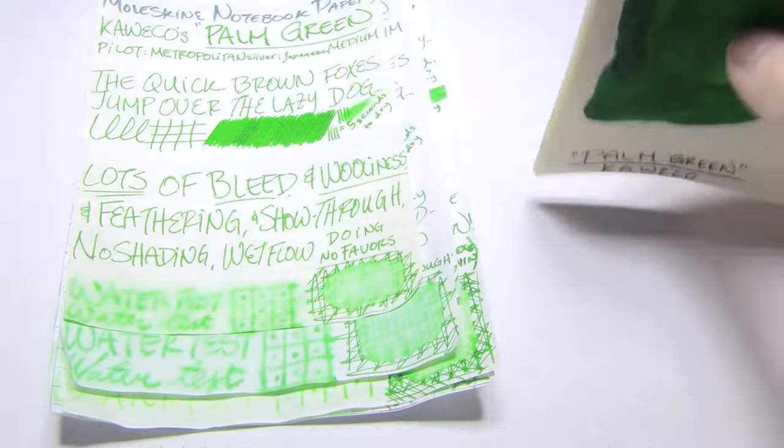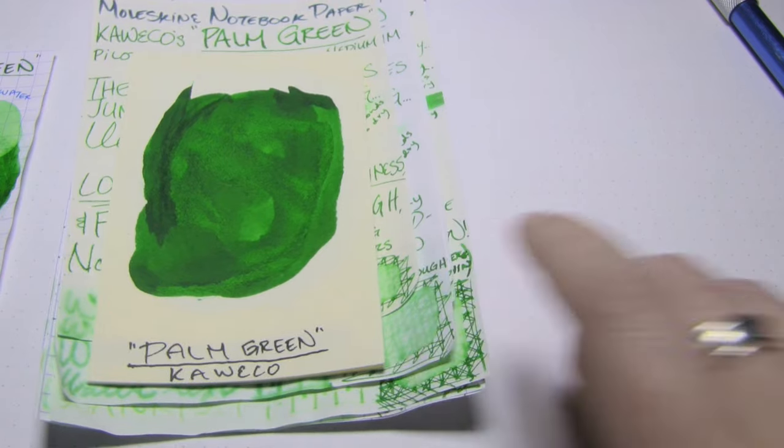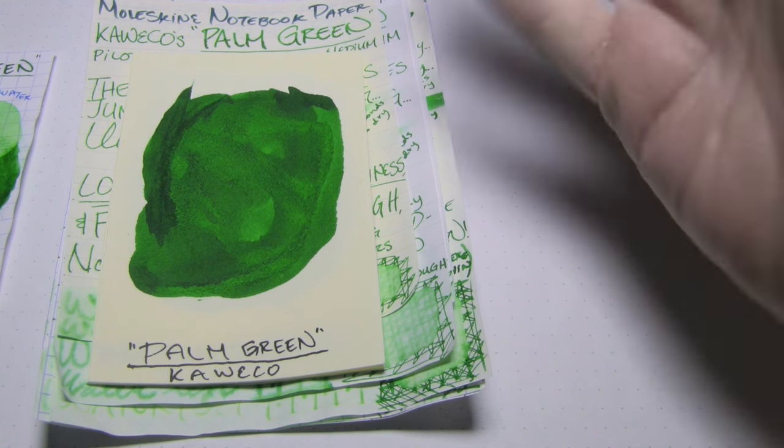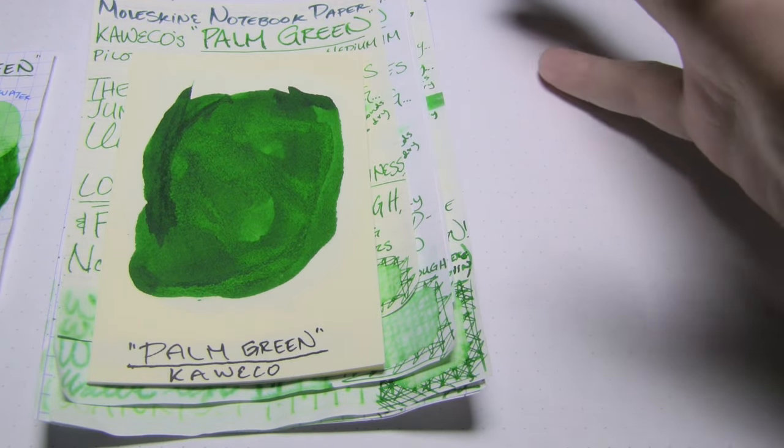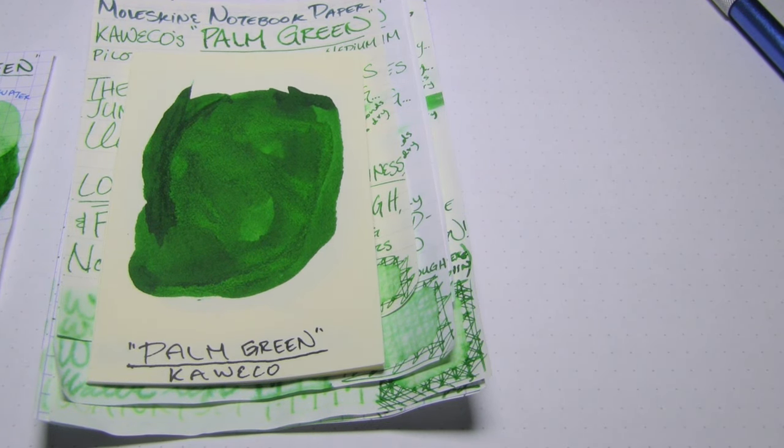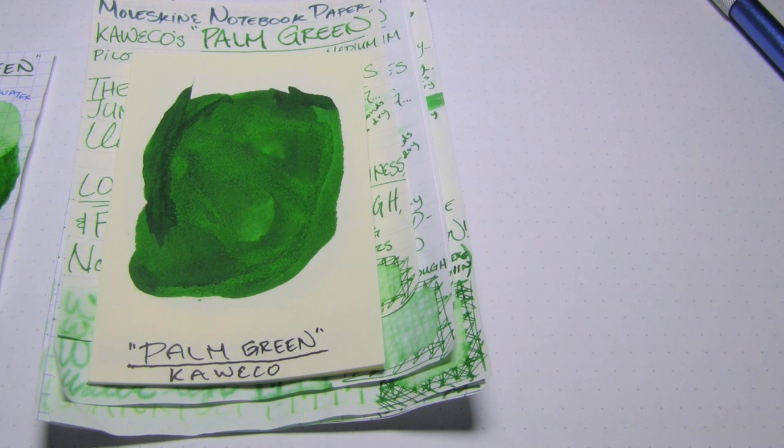So. There you go. For your consideration. Kweko's Palm Green. It's a bright, vibrant green. I want to call it a stereotypical green. When you think green, this is what you're going to think. It shades fairly well on premium papers. It has essentially no water resistance. Not fantastic on cheap papers. But I've certainly seen worse. Just please take my word for it. There's red sheen when you lay it on really thick on premium papers. Just couldn't get it on camera. So. There you go. For your consideration. From the Triple N Network. If you liked the video, please give it a thumbs up. If you'd like to see more, please subscribe to the channel. And thanks for watching. Bye bye.